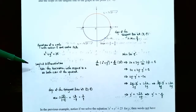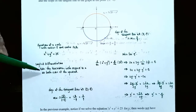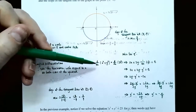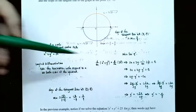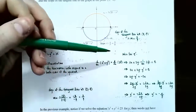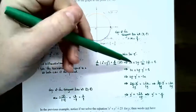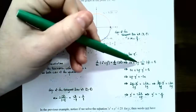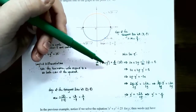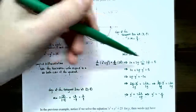Let's use implicit differentiation to find the derivative. You have x squared plus y squared equals 25. We need to take the derivative with respect to x on both sides of the equation. Take the derivative of x squared plus y squared on the left, and take the derivative of 25 on the right. Keep in mind that y is a function of x. The derivative of x squared is 2x, but the derivative of y squared is 2y — that's the derivative of the outside function — but now you need to take the derivative of the inside function y using the chain rule. The derivative of 25 is 0.